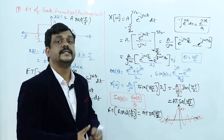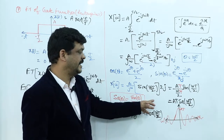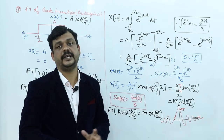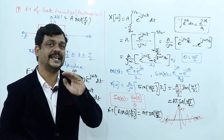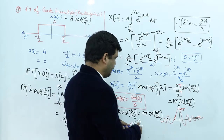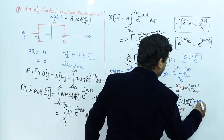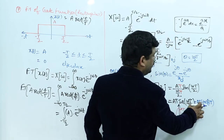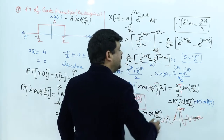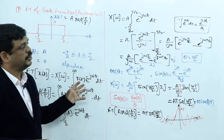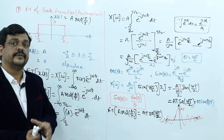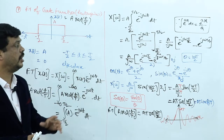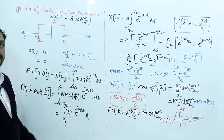This is also called the sinc function, written as sinc(f·T), where the sinc representation eliminates π, so the angle becomes f·T. In the sampling function representation, the angle is ωT/2. So X(ω) = A·T · sinc(f·T). This is a very important problem repeated frequently in academics: find the Fourier transform of the rectangular function or gate function.